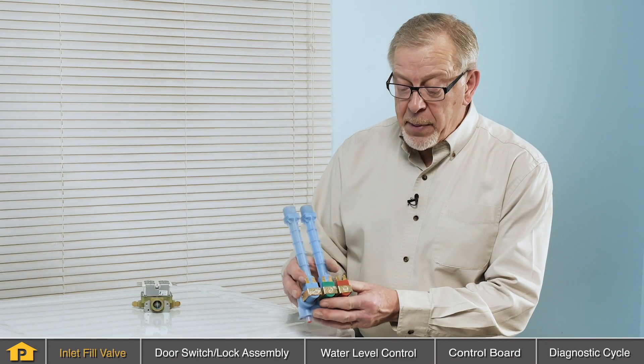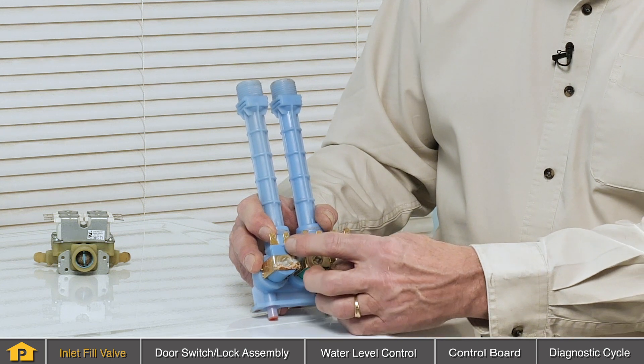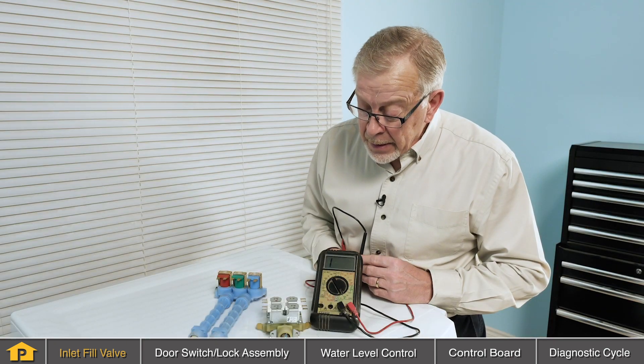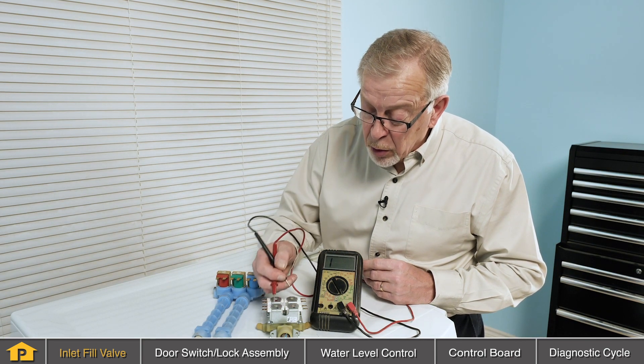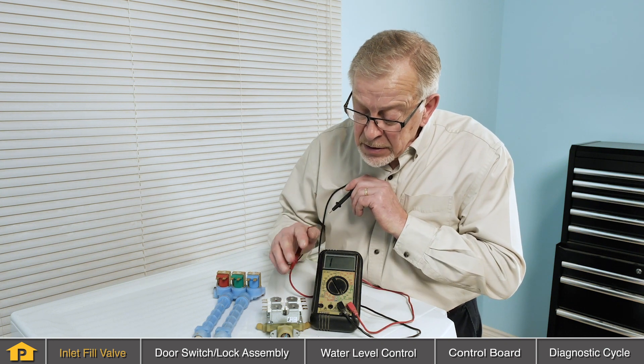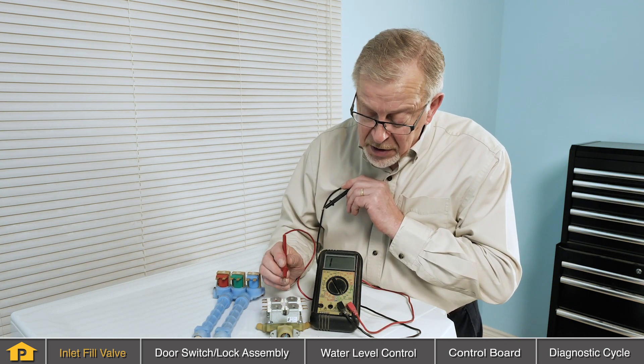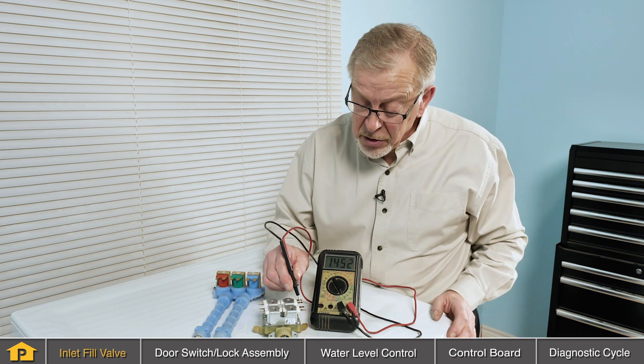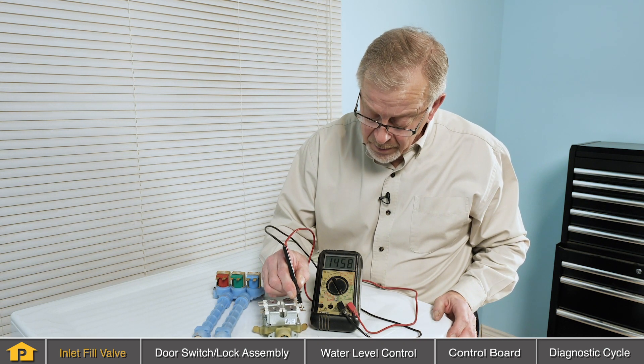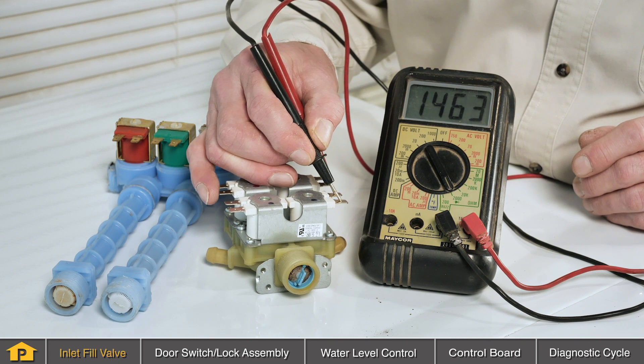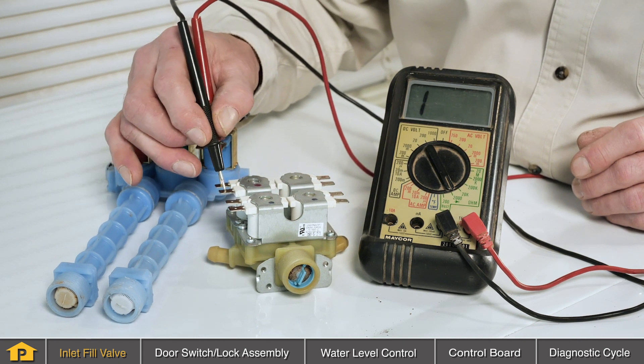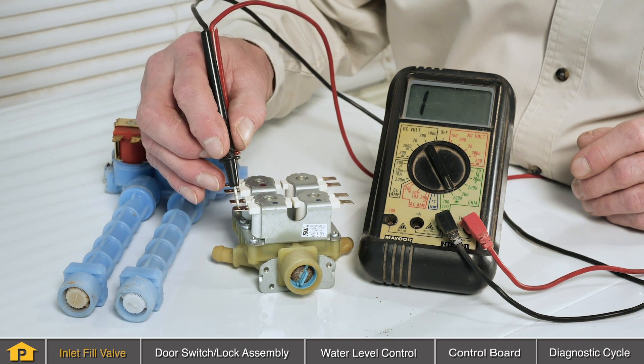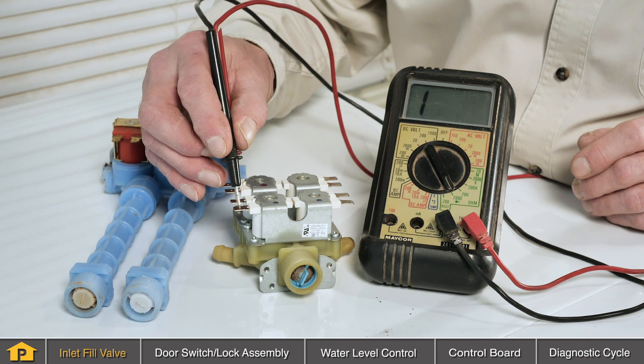Some valves are repairable. You could test the individual solenoids on those valves for continuity using a multimeter. When checking continuity on the individual coils or solenoids, you'll typically find they'll be somewhere between 500 and 2000 ohms. Simply place your meter leads across the terminals and verify that you do have continuity. A reading overscale would indicate there is no continuity and that would indicate that particular solenoid is defective.